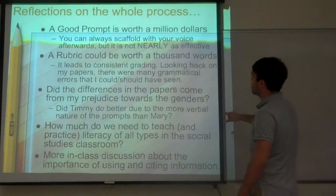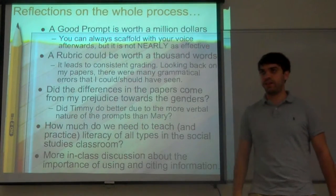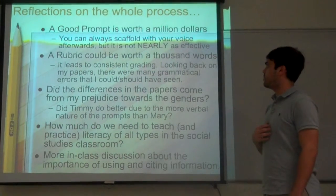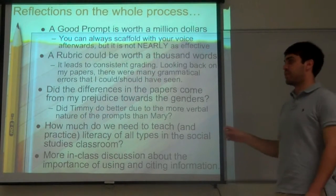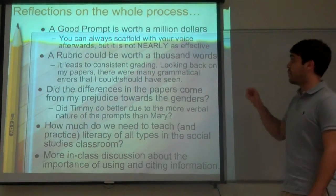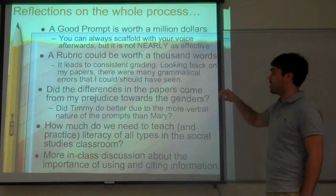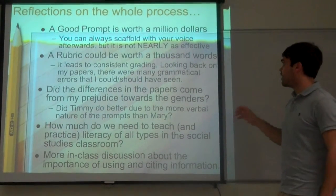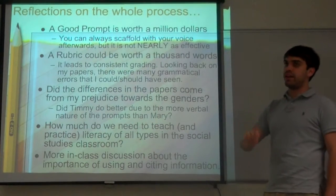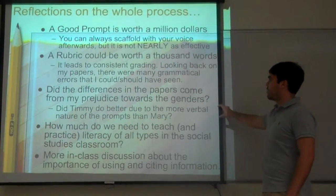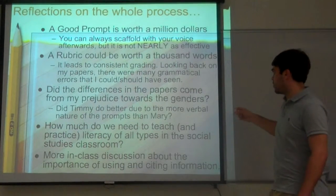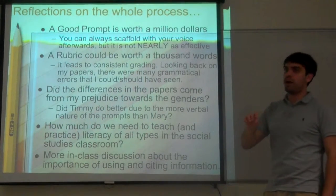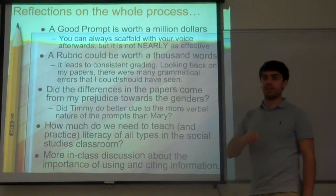Reflections on the whole process: a good prompt is worth a million dollars. If you expect students to write what you want, you need to tell them explicitly what you want — through a prompt or a rubric. A rubric ensures consistent grading. Looking back at many of the papers, I found grammatical errors I could and should have corrected. I also question: did the difference in the papers come from my own bias toward gender? Did Timmy do better due to my more verbal delivery of prompts? And how much do we need to teach literacy of all types in the social studies classroom?